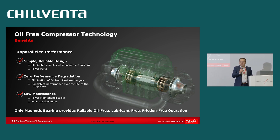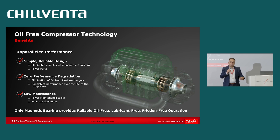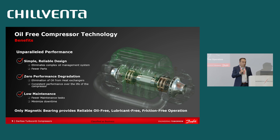Another key benefit is lower maintenance. By having no oil in the system, you can eliminate all of the tasks associated with that. The key differentiator for TurboCore and magnetic bearing is that it is friction-free — no parts in contact. That's not the same for everything that calls itself oil-free. Only magnetic bearing is friction-free and lubricant-free, because a lot of oil-free systems will use refrigerant as the lubricant itself, which has potential failure modes. By eliminating the oil and using mag bearing, you avoid any friction or lubricant.